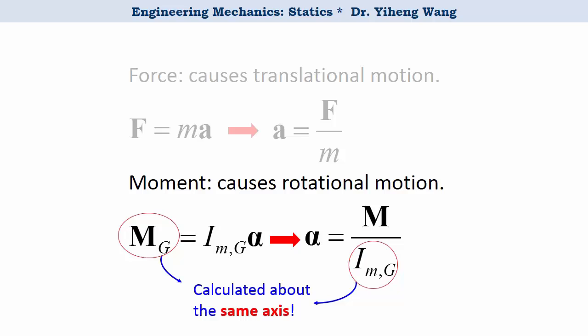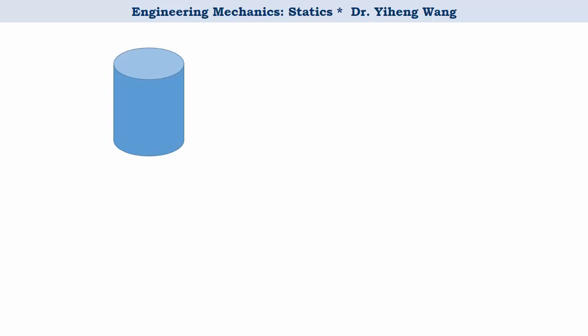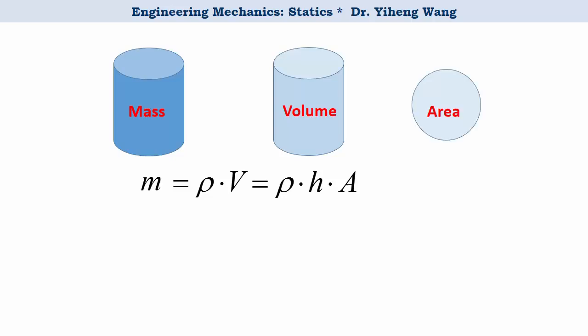So that's the mass moment of inertia. What about the area moment of inertia? We know that for an object with a certain mass, if it has uniform density rho, then mass equals rho times the volume v, and we can use volume to represent the object. And if the volume has one uniform dimension, say uniform height h, then v is h times the cross-sectional area A, and we can use the area to represent the object. The area can be considered as a geometric reduction of the object.